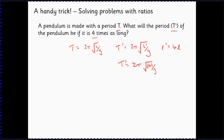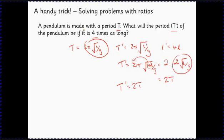What we can do is take this 4 and get it out of the square root, so that's 2 because we're taking the square root of 4, times 2π times the square root of L over g. But 2π root L over g was T, so we know that is 2T. So T dash equals 2T. If we make a pendulum four times as long, then we'll double its period.